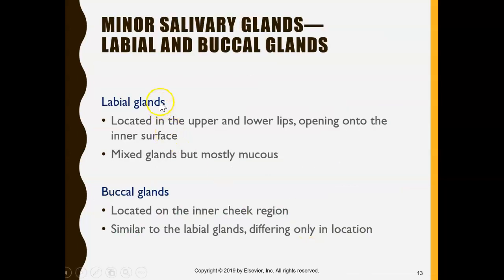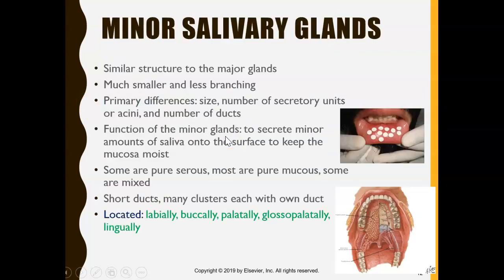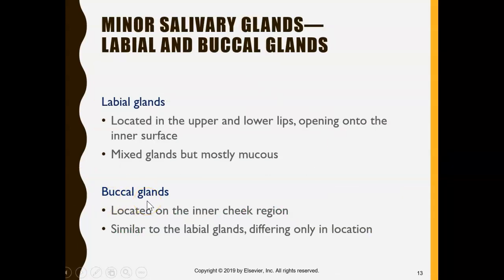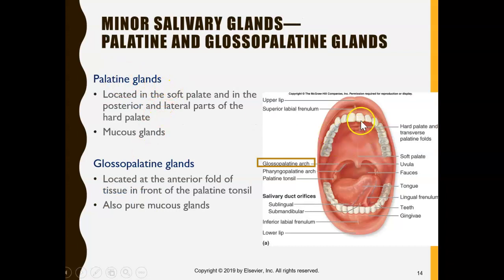Labial glands are found in the inner lower and upper lip. If you dry your inner lip with a gauze or tissue and wait a few seconds, it will become moist again — that's from these minor salivary glands. We also have buccal glands on the inner cheek, palatine glands in the palate, and glossopalatine glands in that area, all keeping the mouth moist.